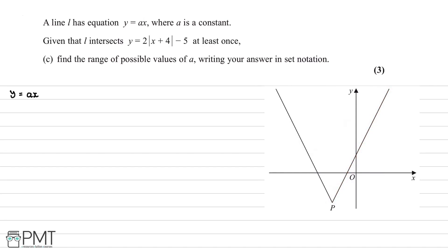The gradient of the right-hand branch of the curve is 2, since the coefficient of x is 2. So when a = 2, the line y = ax is parallel to that branch and passes through the origin, meaning it will never intersect the curve. Therefore for a = 2, there is no intersection.